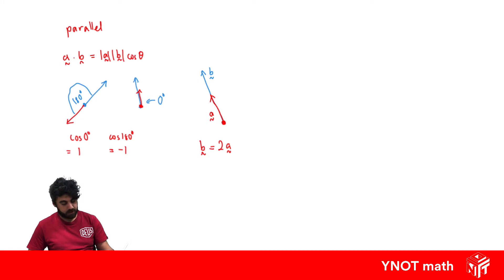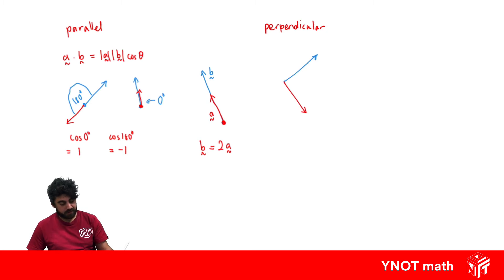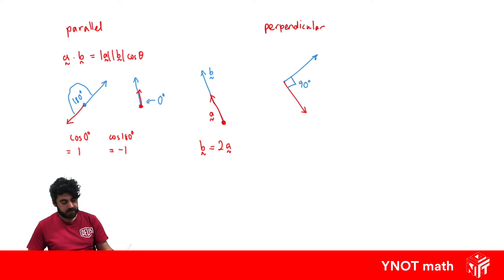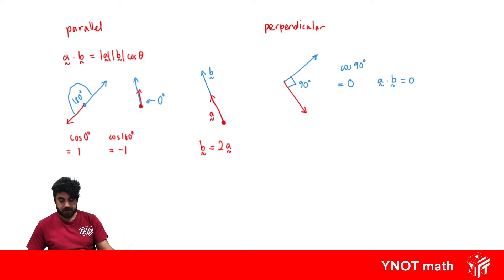What about if vectors are perpendicular? Well, if vectors are perpendicular, the angle between them is obviously going to be 90 degrees. If the angle between them is 90 degrees, that means in our dot product we're looking for cos of 90, and cos of 90 is going to be zero, making the entire dot product equal to zero. This is what we're going to use to find vectors that are perpendicular.